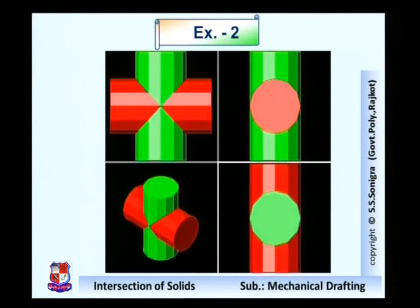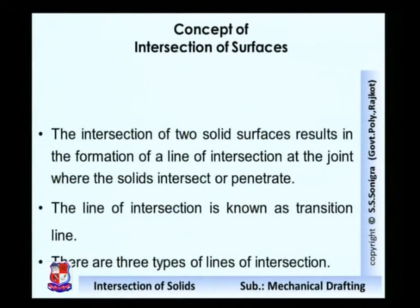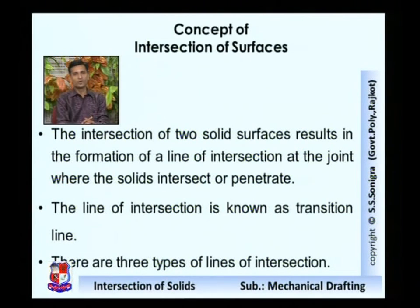This is the front view, side view, top view, and this is an isometric view. This is a comparison of the drawing which we have drawn — the front view, the side view, and the top view as drawn. Now, some concepts of intersection of surfaces. After discussing these two problems, we can conclude: the intersection of two solid surfaces results in the formation of a line of intersection at the joint where the solids intersect or penetrate each other. The line of intersection is also known as the transition line.